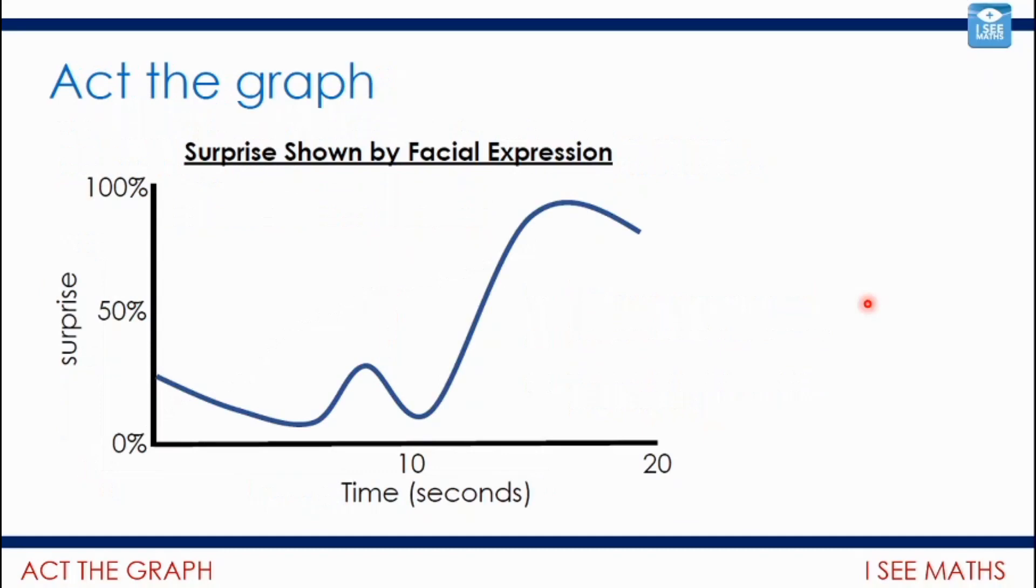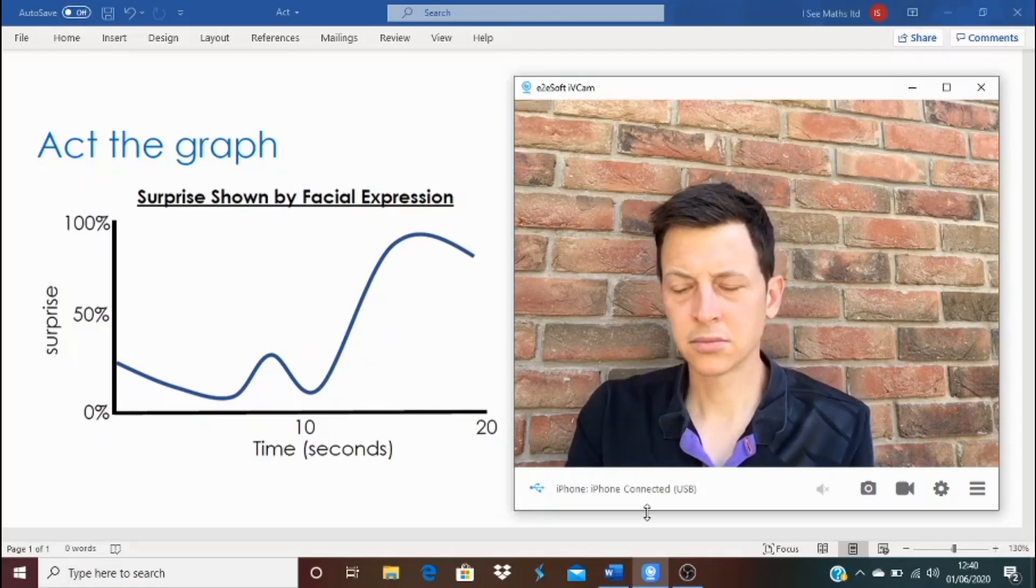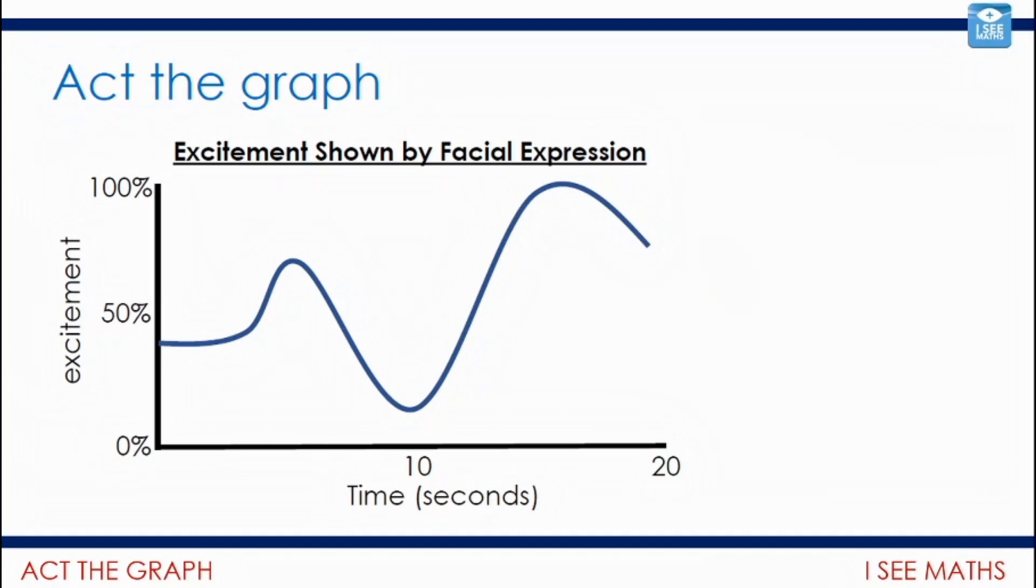Now we're going to come to the star of the show here—act the graph. I'm going to have a go at this one and I'm going to try and bring this graph to life. Now have a look, start off with. We've got surprise shown by facial expression. It's quite low and it gets lower, and how long is it? I'd say that's about seven seconds. And then we show a slight more bit of surprise, and then the surprise increases. Now I'm going to try and bring this graph to life. I wonder how well I do it, how accurately it's done. Let's have a look. [Acting the surprise graph] Well, now it's your turn. Can you act this graph—excitement shown by facial expression from zero to 20 seconds? Of course I'll not be able to see it, but pause the video and have a go. How can you act this graph? Okay, I hope you've had a go. I would have loved to have seen what you did.